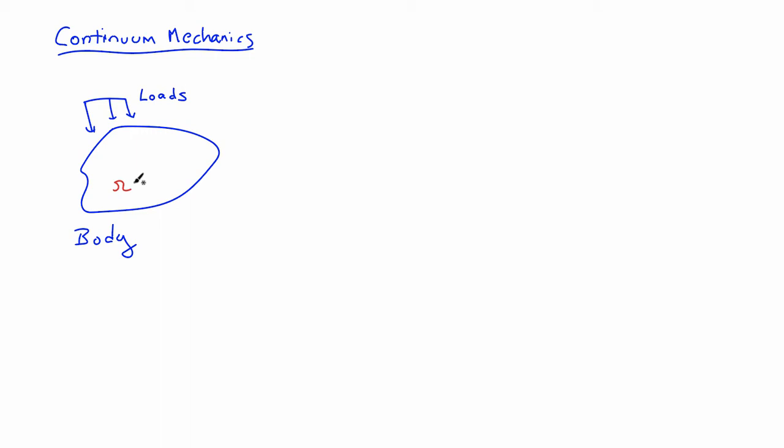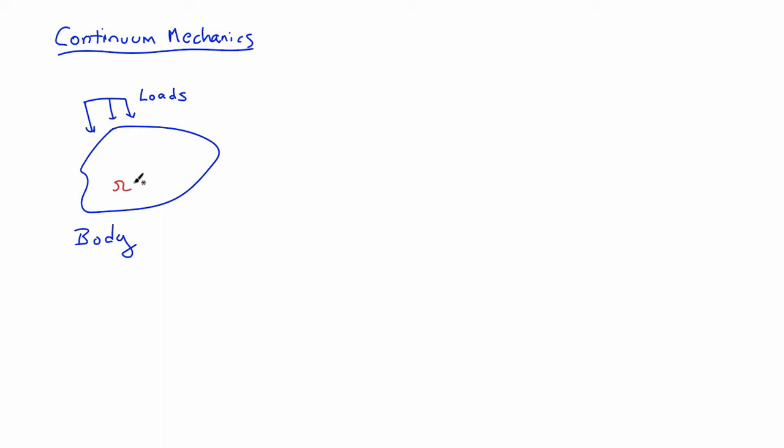And it's a material body. And so we know that the body is made up of atoms. So if we zoom in at a point and we look very closely, we can see the atoms that are arranged in some kind of crystalline lattice of the system. And the atoms, if we assume that our body is composed of iron, for instance, the spacing is about 2.87 angstrom.